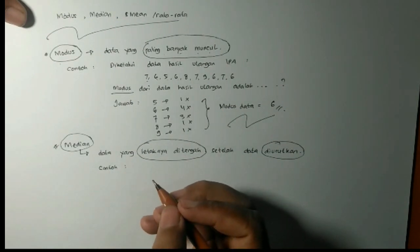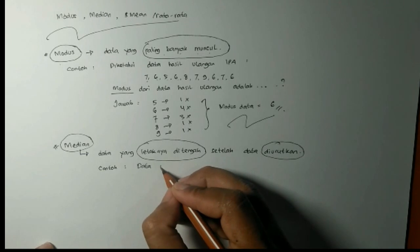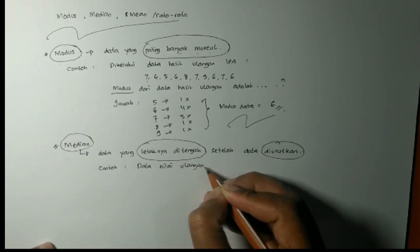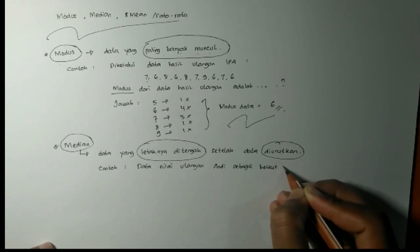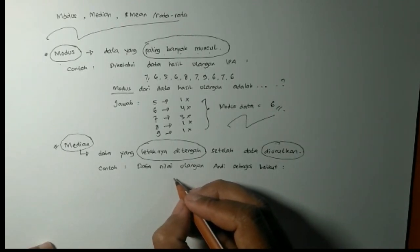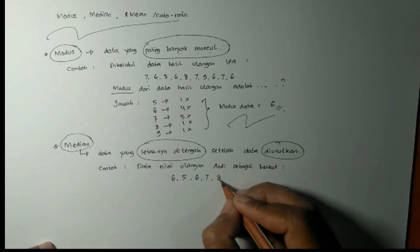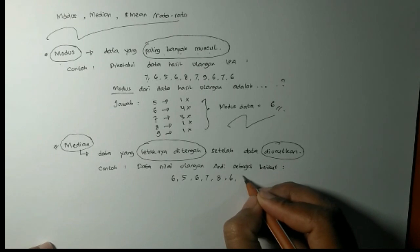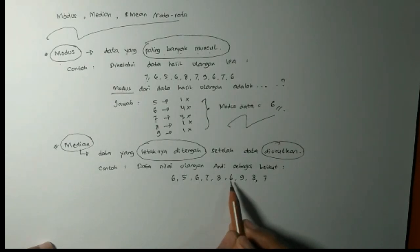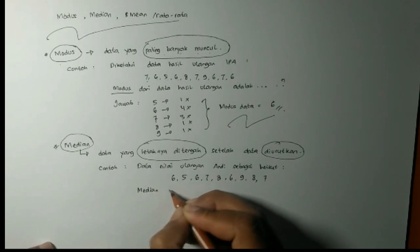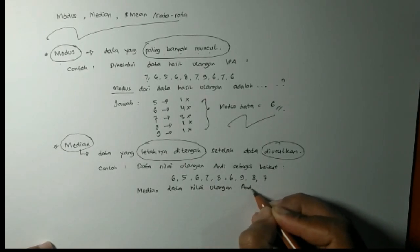Mungkin lebih mudah, langsung lihat kita ke contoh soal misalkan. Contoh soal misalkan data nilai ulangan dari Andi misalkan ya sebagai berikut. 6, 5, 6, 7, 8, 6, 9, 8, dan 7. Sudah 9 nilai ulangan Andi ya. Jadi misalkan di soal itu yang ditanyakan median data nilai ulangan Andi adalah...